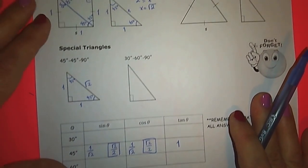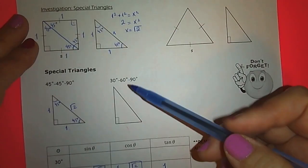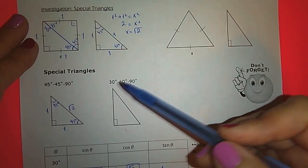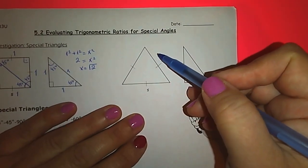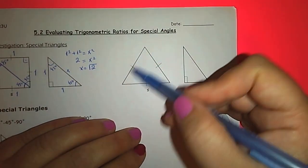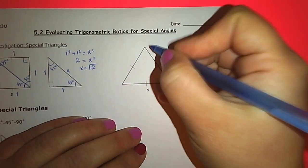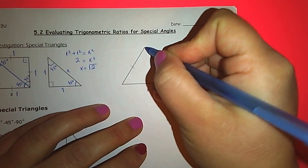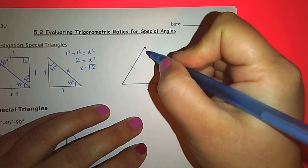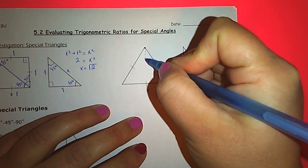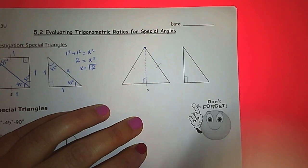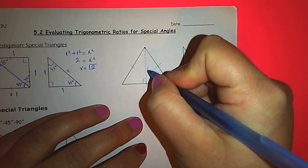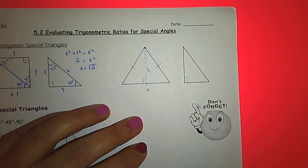Let's go back to the investigation. This time we're going to look at the 30-60-90 degree special triangle. In this case, we are going to use an equilateral triangle. From this vertex, if I drop a perpendicular line to the base, that is actually the height of this equilateral triangle.